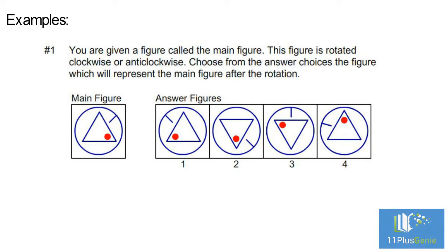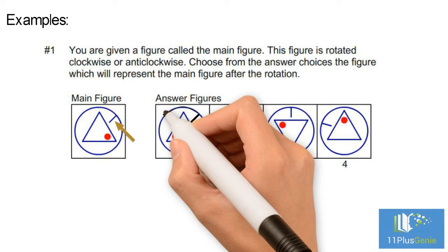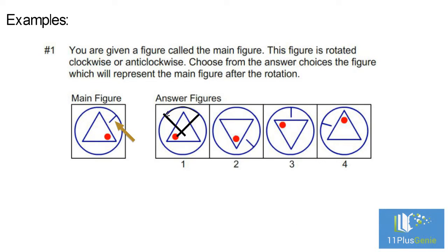Example one: you are given a figure called the main figure. This figure is rotated clockwise or anti-clockwise. Choose from the answer choices the figure which will represent the main figure after the rotation. We will use this little line to determine the angle and direction of rotation. In figure one, this line has rotated in an anti-clockwise direction.